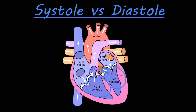Diastole is going to refer to the relaxation period. So after you contract, the heart muscle is going to relax — the right ventricle relaxes and that allows blood from the right atrium to flow into the right ventricle and refill. Same thing with the left side.